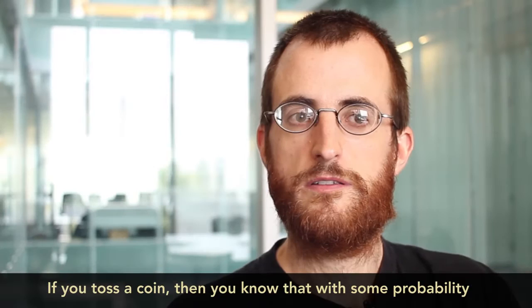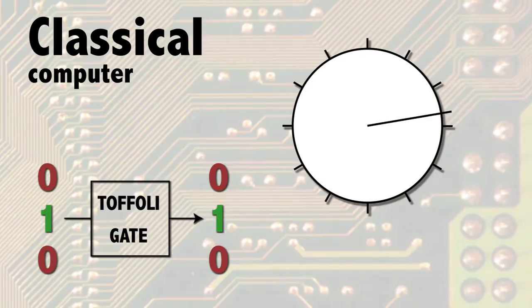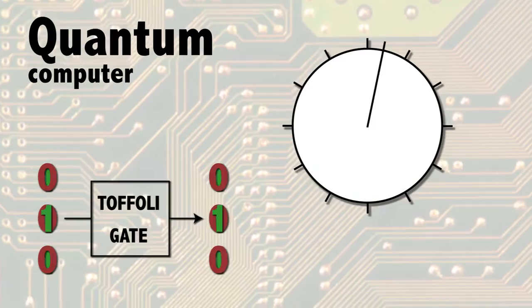If you toss a coin, then you know that with some probability you get true and some probability you get false, but you don't have both at the same time. In quantum information, you do have both at the same time. This superposition of values is what gives quantum bits or qubits their computational power. But that power collapses when you measure the answer that those qubits provide.